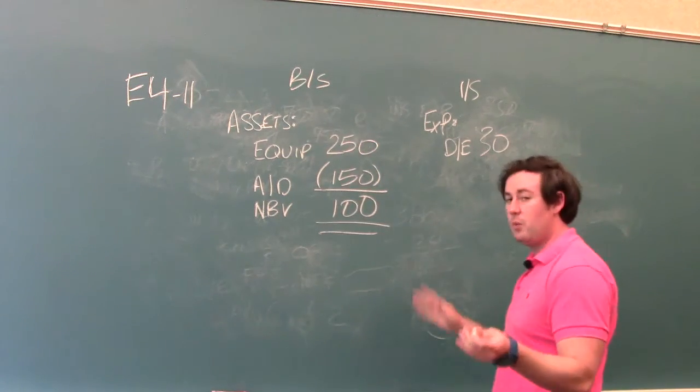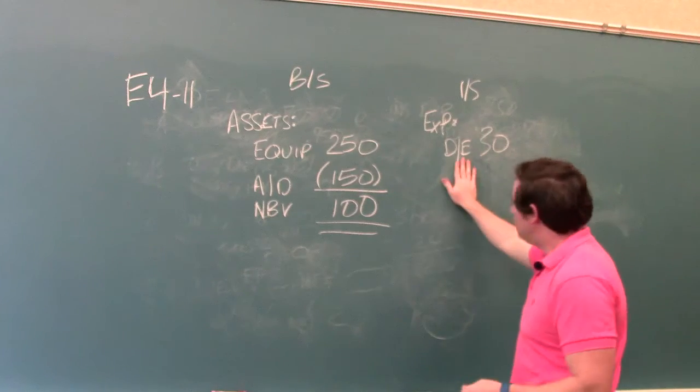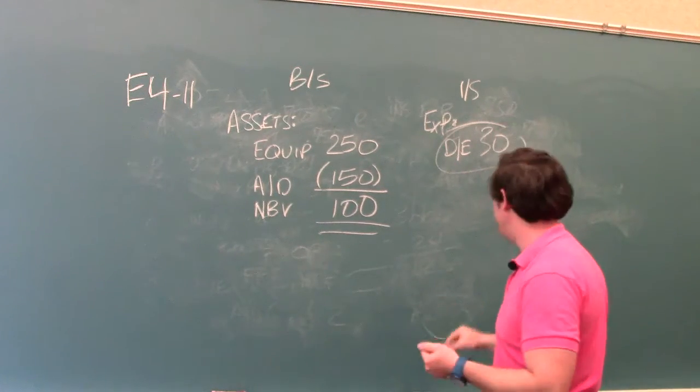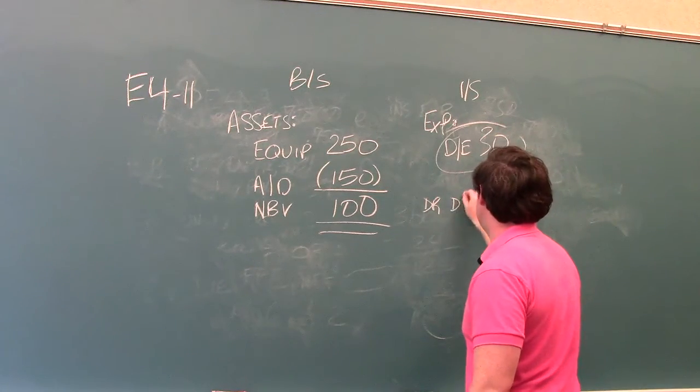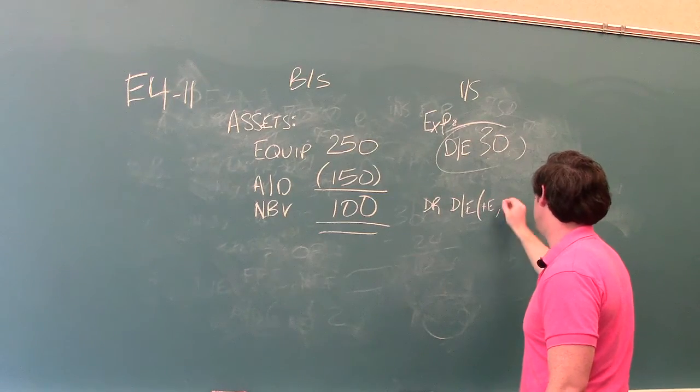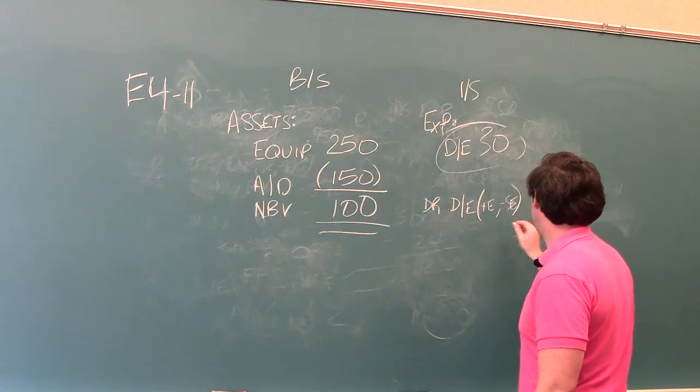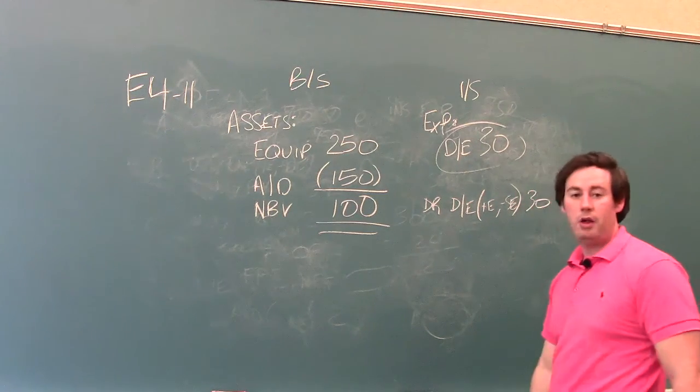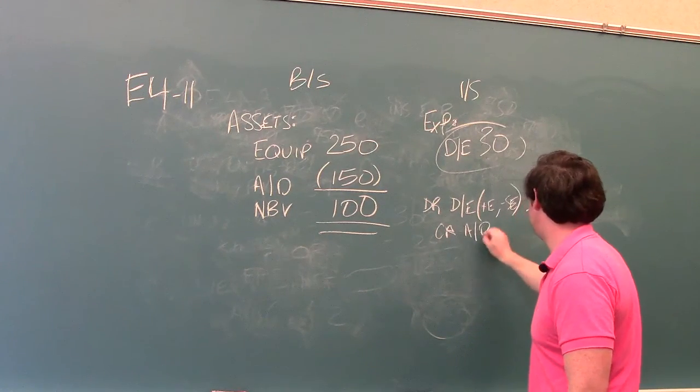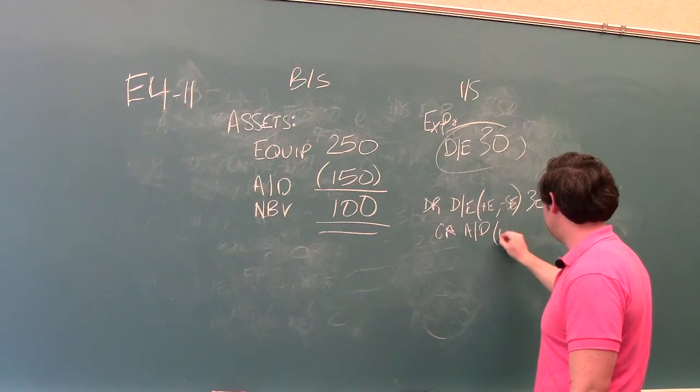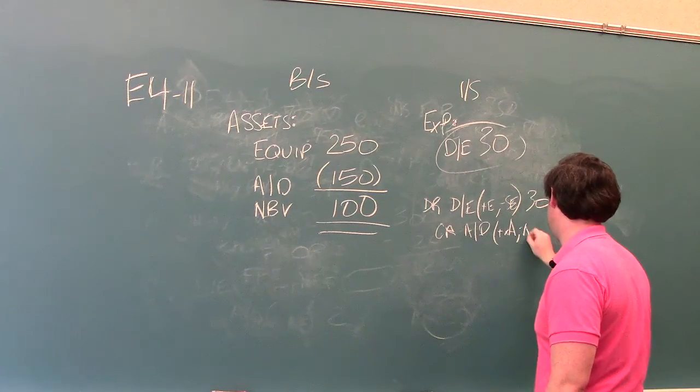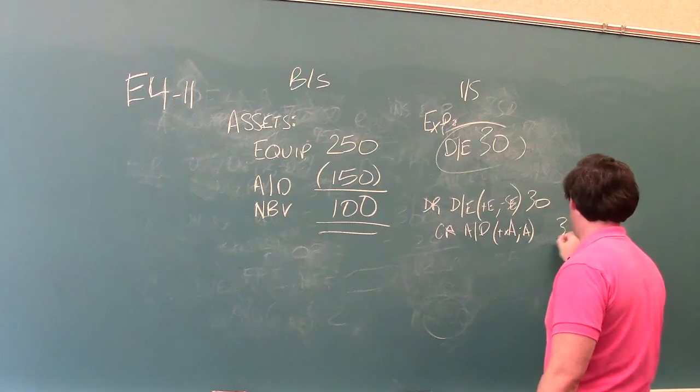But with this information, what I want you to be familiar with is the journal entry, because this is the current year amount. The journal entry that you would actually record is debit depreciation expense. I'll write this out for you. It's a plus expense and a minus SE. The amount is $30,000. And we would credit accumulated depreciation. Accumulated depreciation is a contra asset, so we'll do a plus XA, which actually decreases the overall assets. And we'll do $30,000 over here.